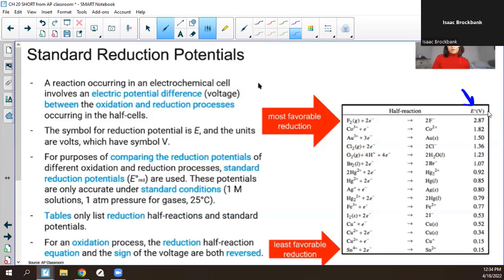So reaction occurs, involves an electrical potential difference. Think about the falling water between the oxidation and reduction process occurring in half cells. The symbol for the reduction potential is E and the units are volts, which have the symbol V. So F2 plus two electrons goes to 2F minus. We end up with 2.87. That is a process that wants to happen. Fluorine wants to gain electrons. If you put them together, we could make a 10 fluoride battery. We could get a lot of voltage and we would end up with a very powerful battery.